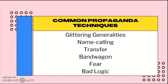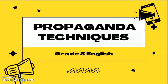To recap, we have talked about the six common propaganda techniques: glittering generalities, name calling, transfer, bandwagon, fear, and bad logic. That is all for our lesson on propaganda techniques. You may now proceed to your next activity. Thank you.